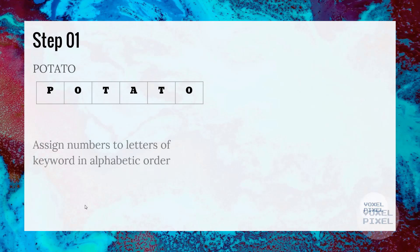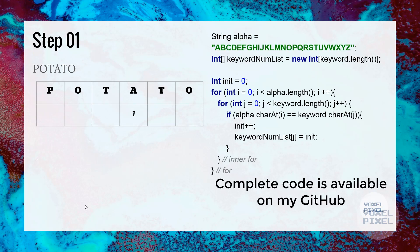Next, we assign numbers to letters of keyword in alphabetic order. Number assignment can be achieved by this code. Since A is the first letter in the alphabet, we will assign it number 1. Looking at the keyword, we can see that letter O appears twice, so we will assign it numbers from left to right. First occurrence of O will be given number 2 and second will be given number 3. P will be assigned number 4. First T will be assigned number 5 and second T will be assigned number 6.